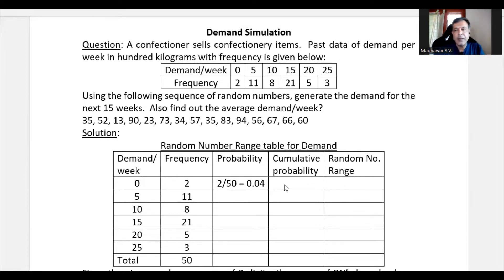Similarly, 11 divided by 50, we get 0.22. Similarly, 8 divided by 50, we will get 0.16. This is 0.42. This will be 0.10 and this will be 0.06. Now if we add these probabilities, it is 0.26, 0.42, 0.84, 0.94 and 1. So the total probability should be 1 only.